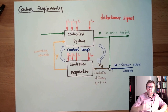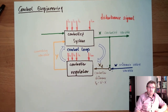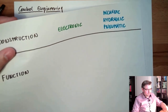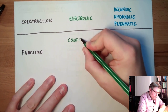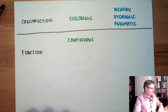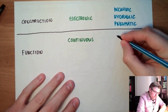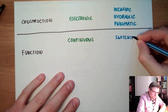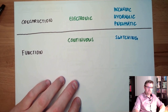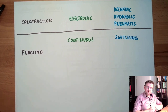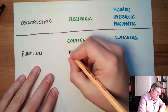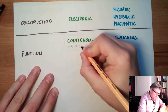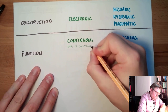Or if the heater has several steps — zero, one, two, three — and it switches through those steps, it's also a switching or discrete controller. So there are two types: continuous and switching. We always have to look at the correcting variable — whether the correcting variable is continuous or switched.